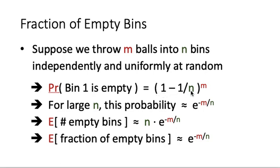The chance for the first ball to be thrown into some other bin is 1 minus 1 over n, and this happens for each of the balls. So the corresponding probability will be 1 minus 1 over n to the power m. When n is very large, 1 over n will be very small, and this term is very close to e to the power minus m over n.